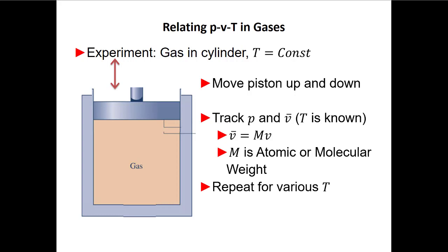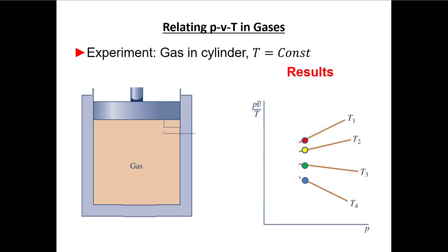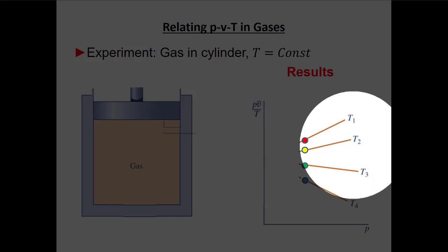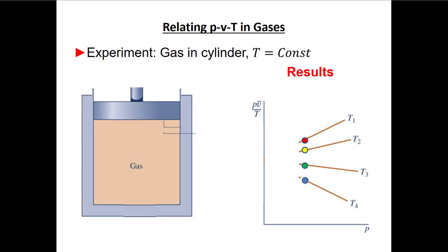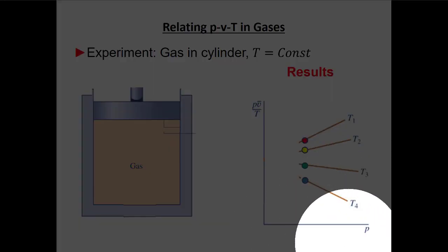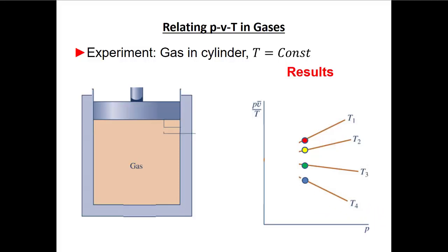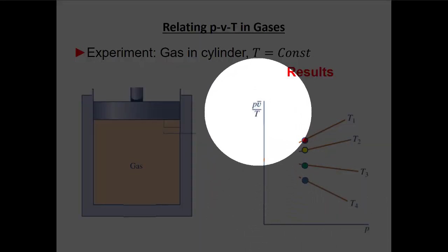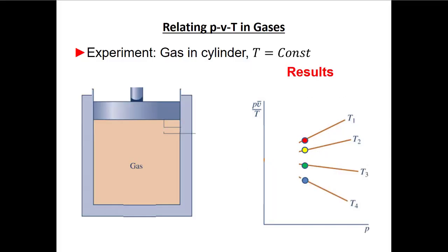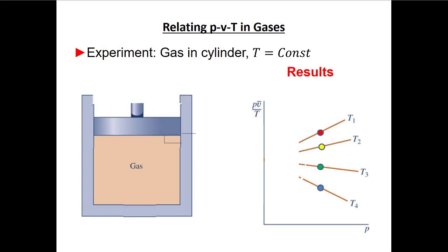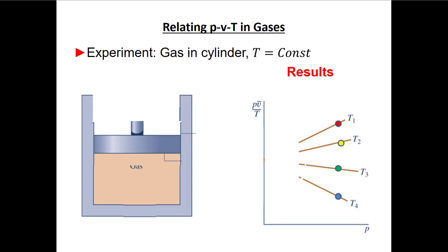We're going to do this experiment and repeat it at different temperatures. The piston is going up and down — as it comes down the pressure goes up. If I keep temperature constant and do different temperatures T1, T2, T3, T4, I'll plot on the x-axis the pressure and on the y-axis I'll plot pressure times specific volume divided by temperature.